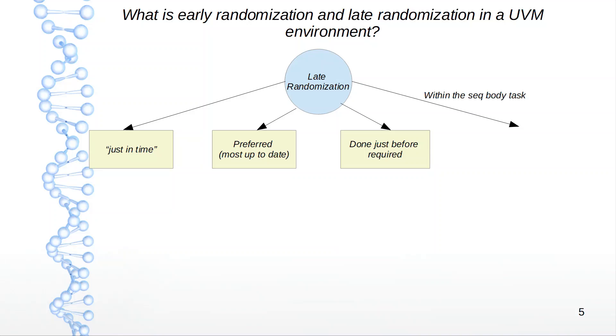What's the usage of this? Within the sequence body task, you call start_item, finish_item, and randomize. When you call randomization after start_item, that means you have already been granted permission by the sequencer. Start_item is a blocking call.